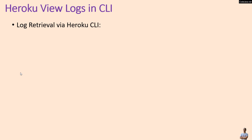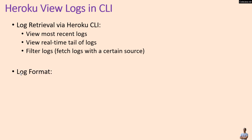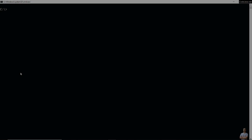For log retrieval via Heroku CLI, you can view the most recent logs, view a real-time tail of logs, and fetch logs with a certain source. The log format in Heroku is: timestamp, then source, then dyno name, then the log message.